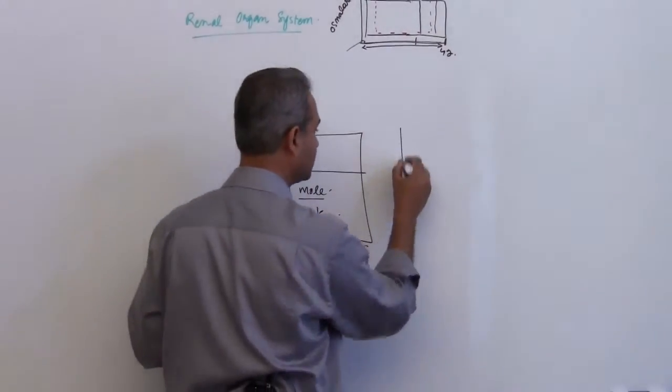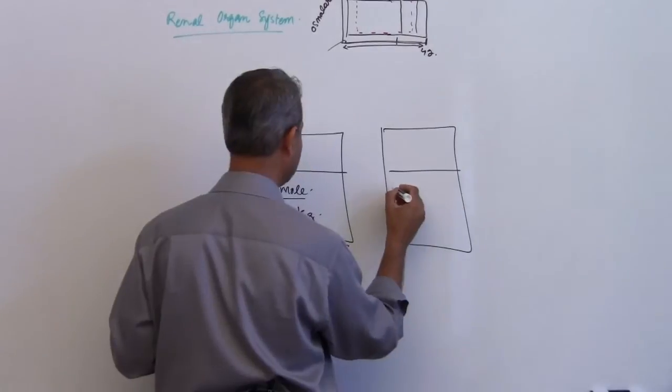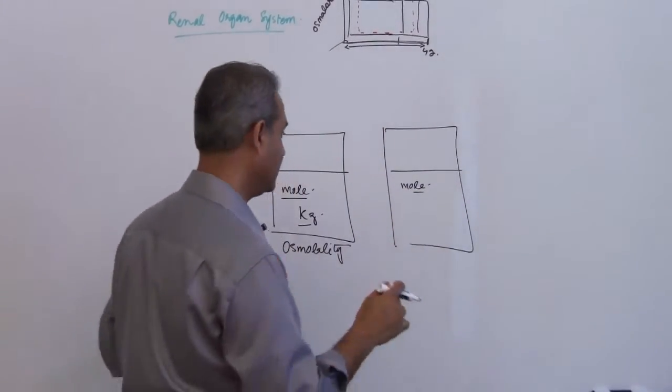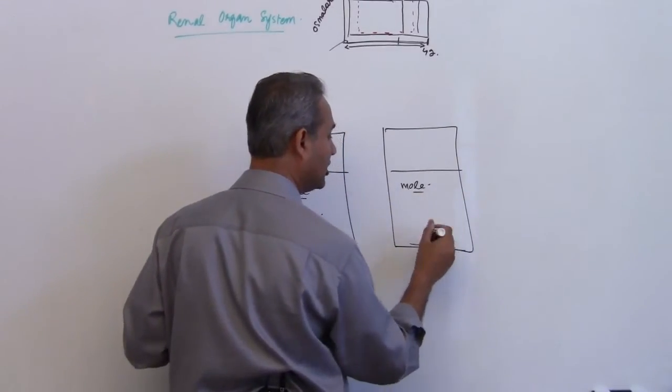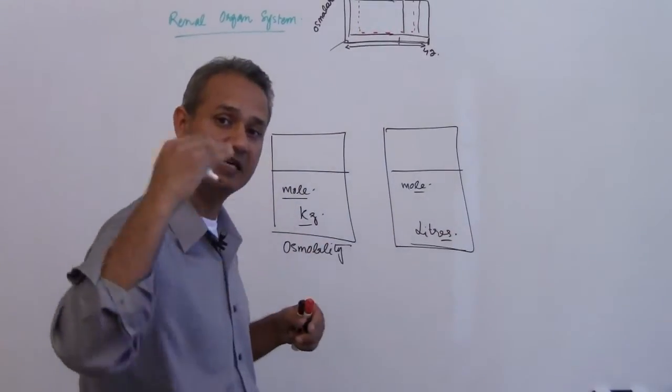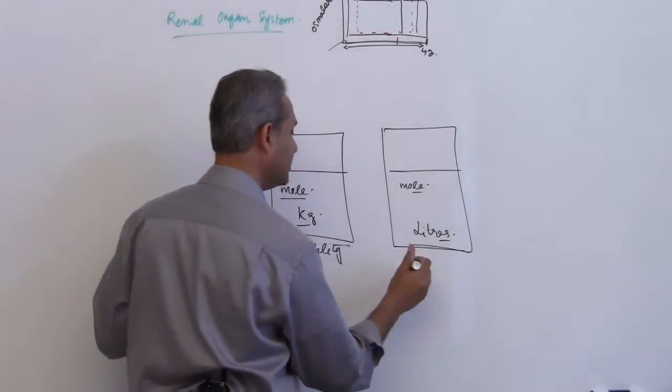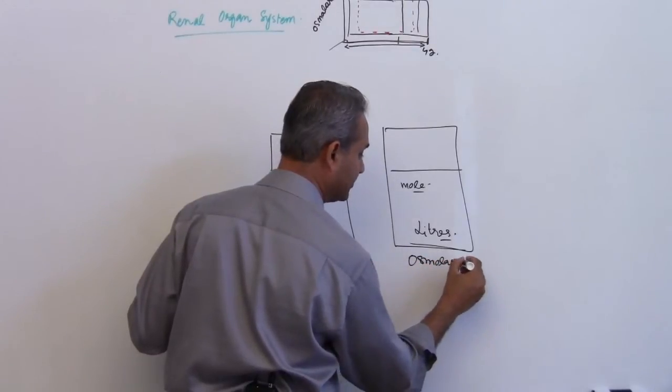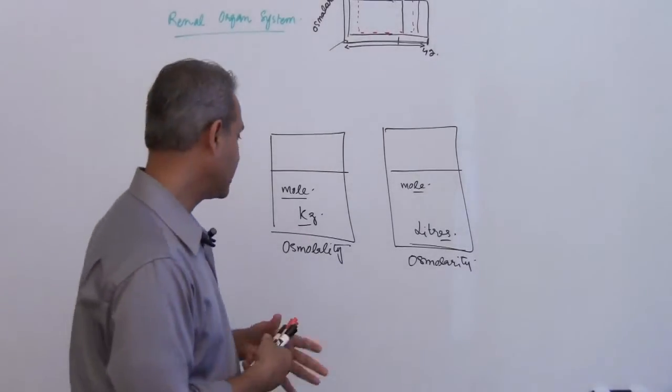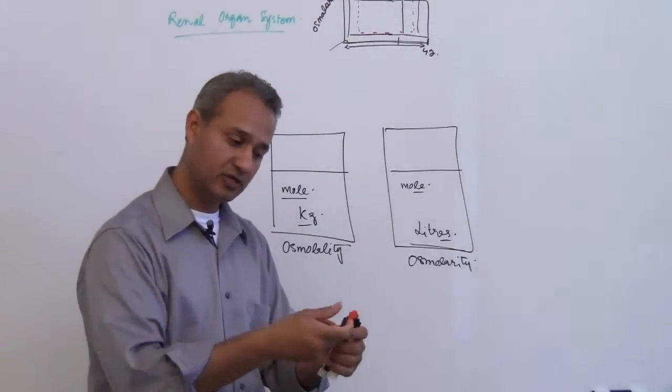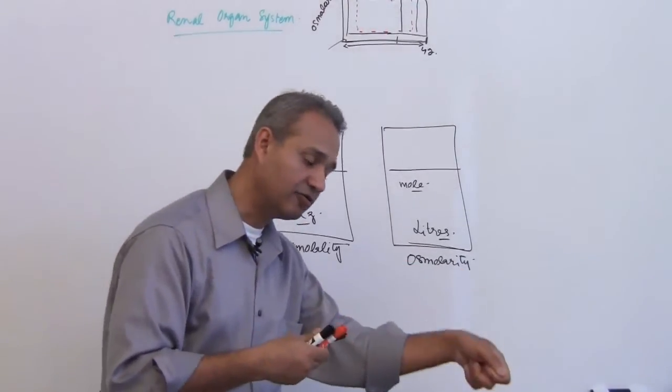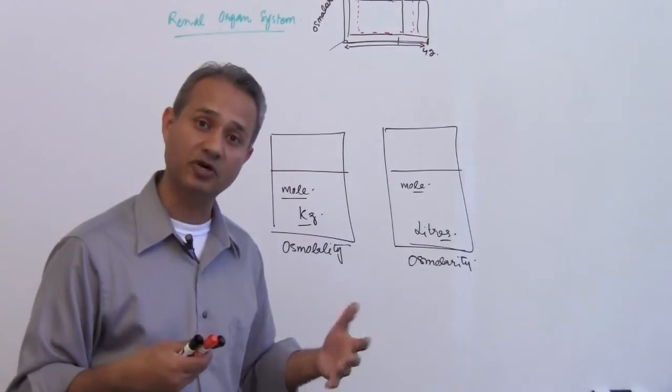But if the same thing is measured, if we have one mole or two moles in the measured volume which is in liters instead of kilograms, so the solvent is measured in liters, then it is called osmolarity. Frankly, it is easier to measure liters. For example, if you pick up some blood you can pull it in a syringe and the syringe can tell you how many milliliters, instead of putting that in a weighing scale.